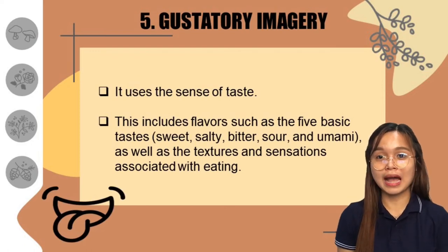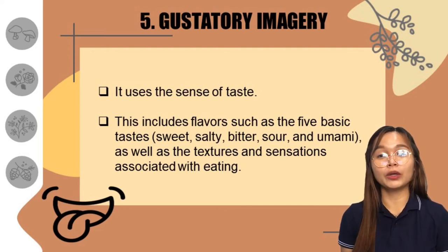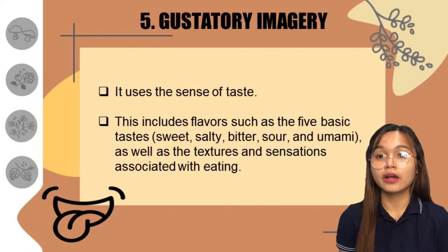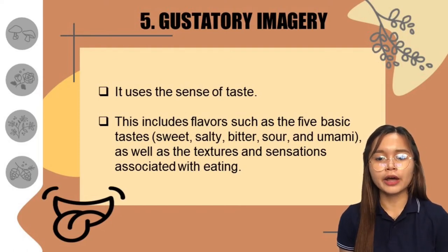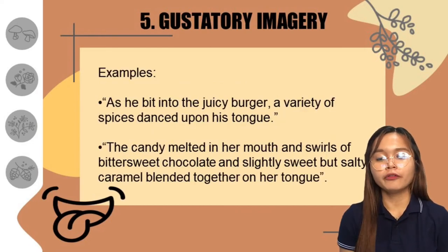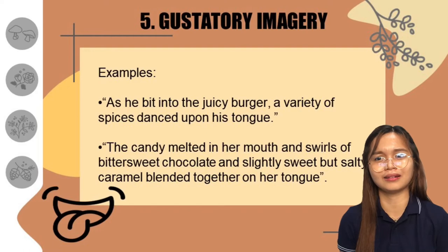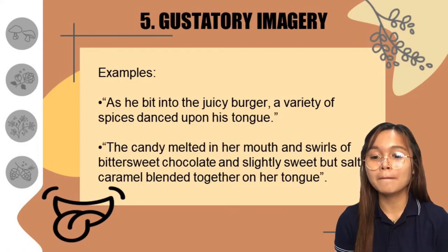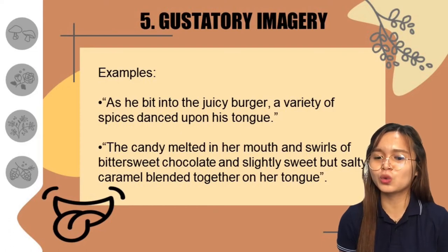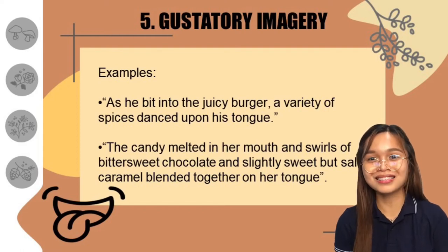The last one is gustatory imagery. Of course, it utilizes our sense of taste for us to understand the text. It includes the five basic tastes — sour, bitter, sweet, salty — and the textures and sensations associated with eating. For example: 'As he bit into the juicy burger, a variety of spices danced upon his tongue.' And: 'The candy melted in her mouth and swirls of bittersweet chocolate and slightly sweet but salty caramel blended together on her tongue.' Those are examples of gustatory imagery.